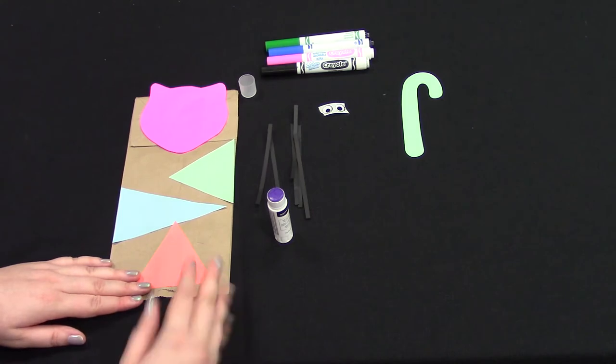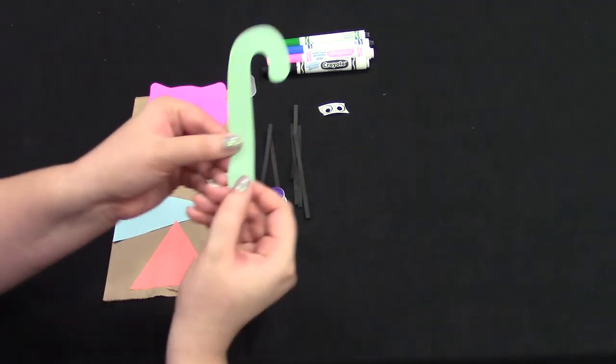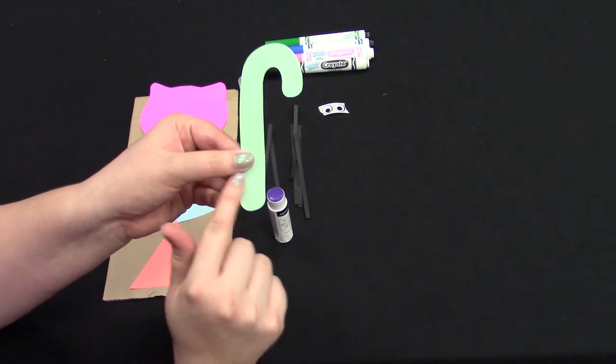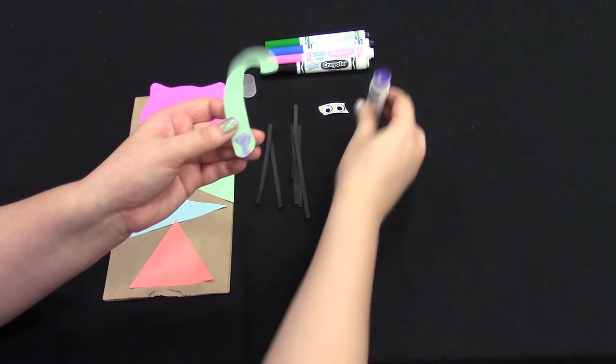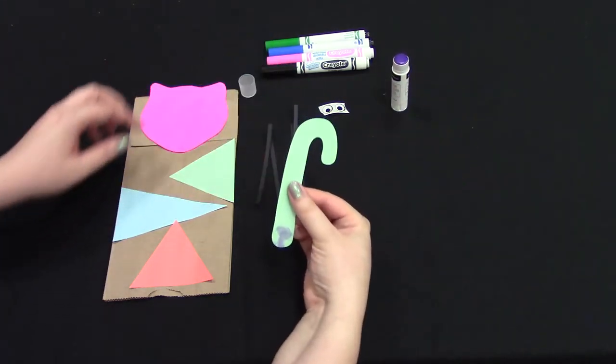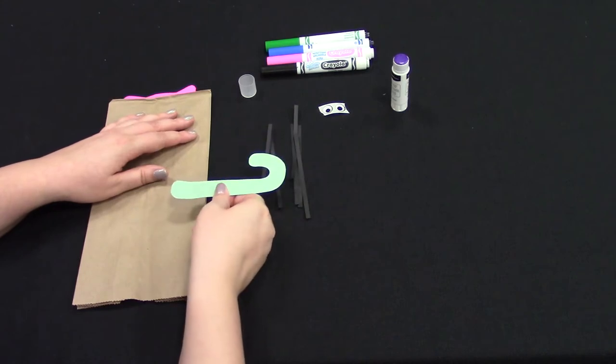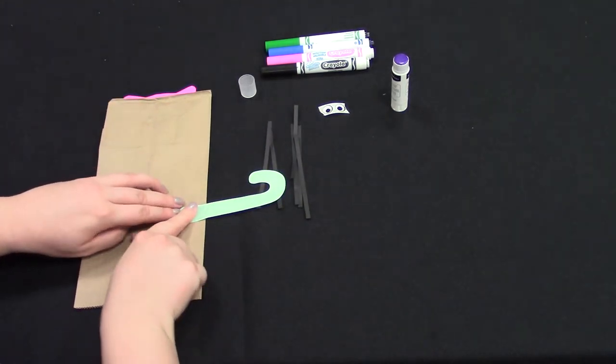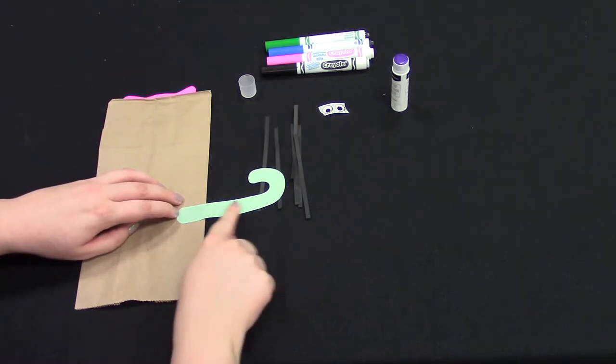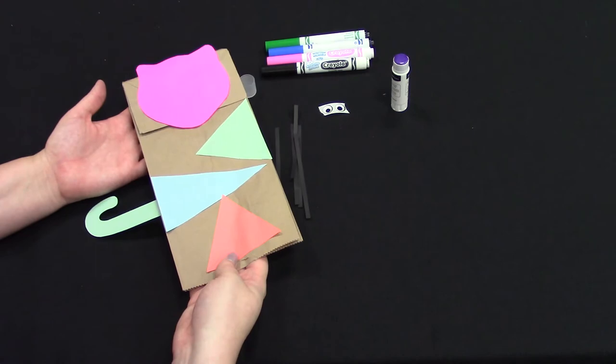Next, taking your tiger tail, you're going to place glue but only on the straight end. There you go. Flip over your paper bag puppet and glue your tail to one side. Make sure that a lot of it sticks out so when we flip it over, his tail pokes out.